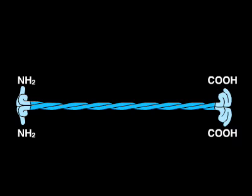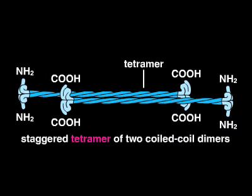Two dimers then line up to form a staggered tetramer. Note that the two dimers are arranged in opposite orientations, with their amino-terminal ends away from each other, so that the two ends of the tetramer are indistinguishable.